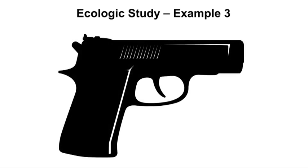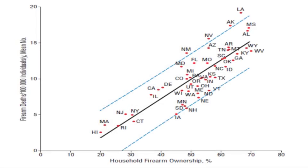Let's look at an example of an ecologic study conducted on household firearms or gun ownership in the United States and deaths. In this figure from Fliegler et al. 2013, we see that by state — the group level — as household firearm ownership increases, there seems to be an increase in firearm deaths per 100,000. This is an example of an ecologic study in which both the exposure, household firearm ownership, and outcome, firearm deaths, are measured at a group level.